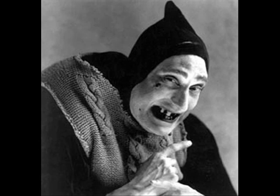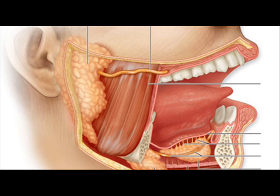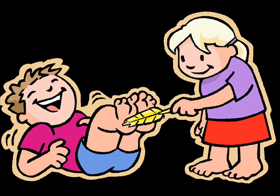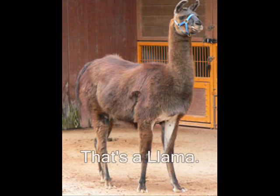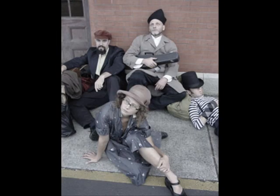S is for salivary glands — as you can see, you've got the salivary and then you've got the glands there. T is for tickle — and when you get tickled, you go... U is for ungulate — which this thing is right here. It's called a split-toe ungulate.